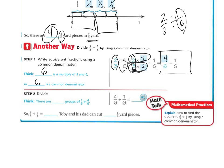Two thirds divided by one sixth. I know that's going to be the same, so I would want to just change this one. So then I do two over two here, which would give me the four sixths. So now I have four sixths divided by one sixth. So if you think, there are four groups of one sixth in four sixths. So two thirds divided by one sixth is four, and Toby and his dad cut four one sixth yard.